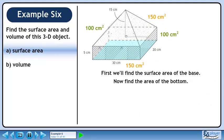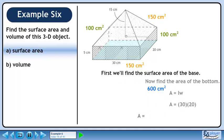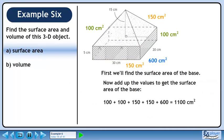Now find the area of the bottom. The area of a rectangle is length times width. The base has dimensions of 30 cm by 20 cm. The area is 600 cm². Now add up the values to get the surface area of the base: 1100 cm².